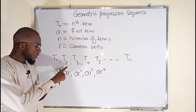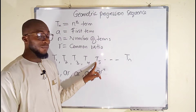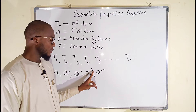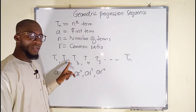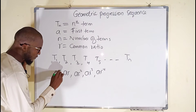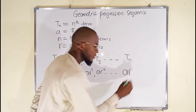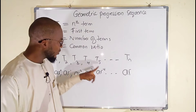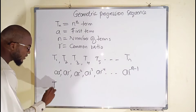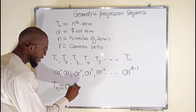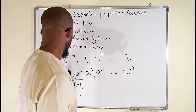Look at something here. The power of r is 4 here, but the term number is 5. Can you see that the power of r is 1 less than the term number? 3 is 1 less than 4. 2 is 1 less than 3. 1 is 1 less than 2. And for the first term, r has a power of 0. So to get the nth term, we raise r to the power of n minus 1, because 5 minus 1 is 4, 4 minus 1 is 3, and so on. Therefore, the general formula Tn can be written as a times r raised to the power of n minus 1. This is the formula we use to find every term.